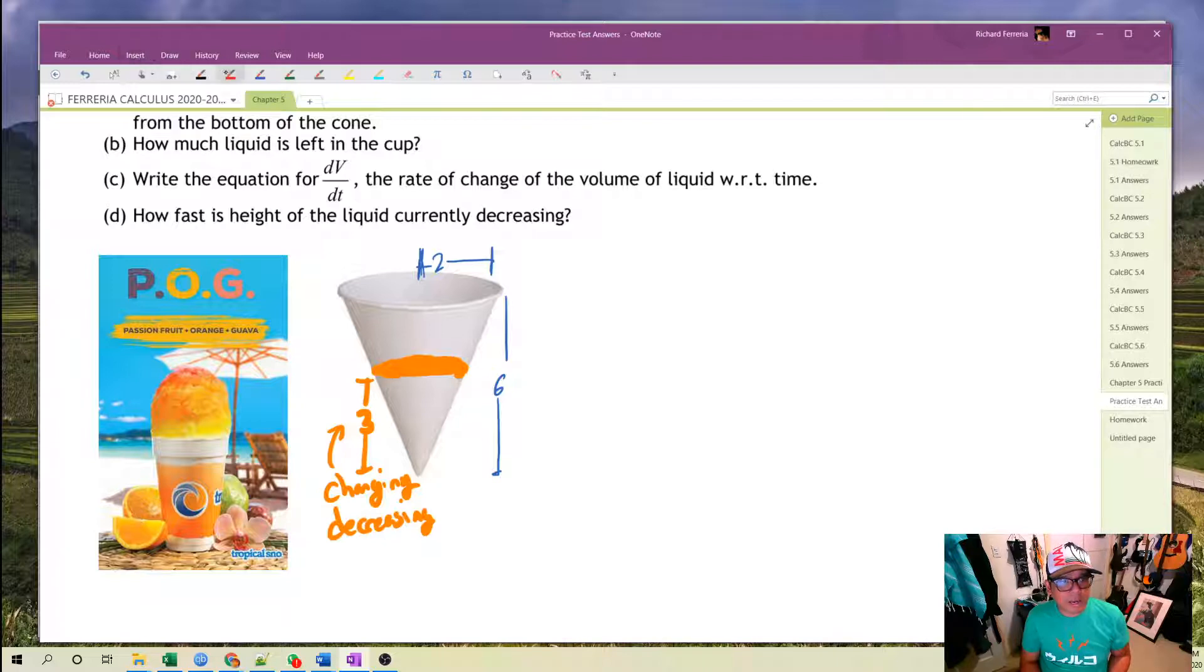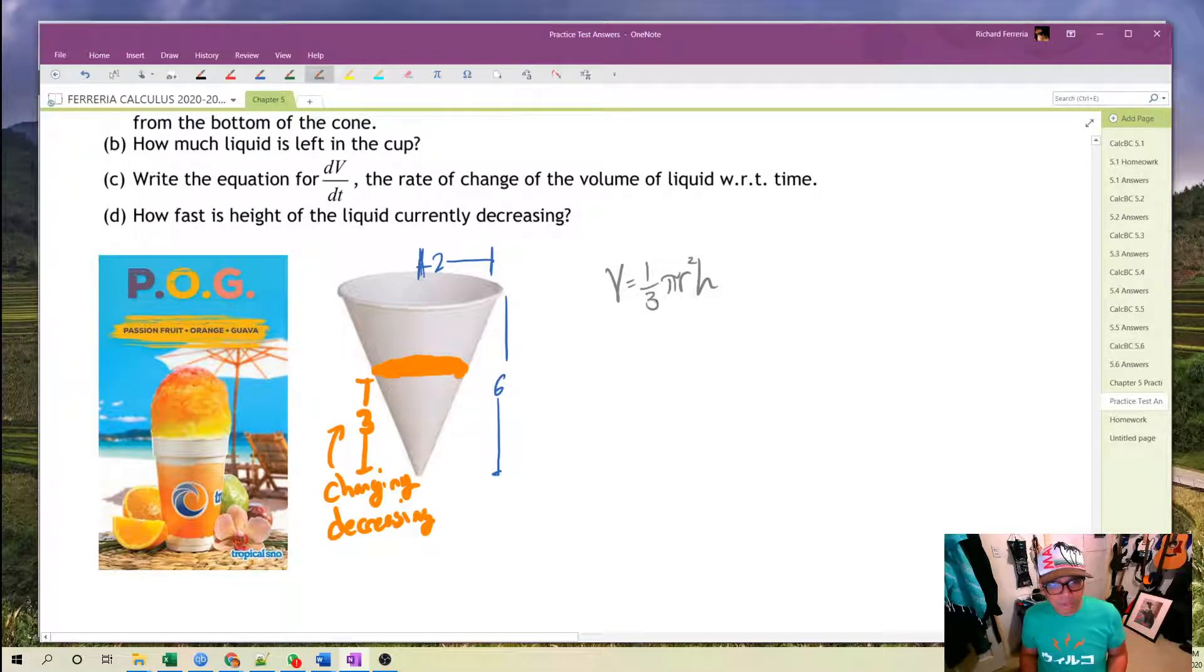Let's write things out then in terms of what we know. We know that the volume of the cone is one-third pi r squared h. This is a little bit unsatisfactory because we have three variables in our equation. So we're going to use similar cones to figure this out.